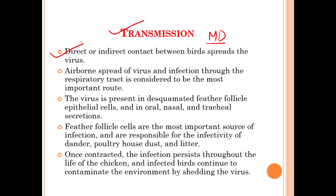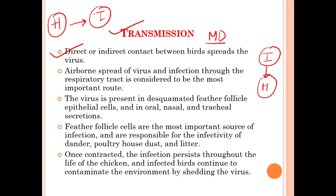Simply, the direct or indirect contact between birds spreads the virus. If an infected bird comes into direct contact with a healthy bird, the Marek's disease virus will be transmitted. This is the indirect mode and this is the direct mode. The airborne spread of the virus and infection through the respiratory tract is considered to be the most important route.